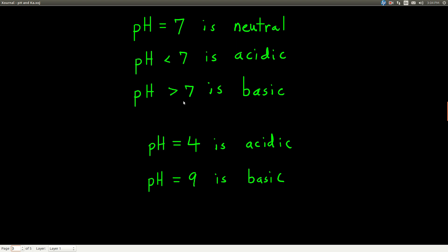If the pH is greater than 7, then it's basic. So for example, if the pH of a solution is 4, that's an acidic solution because it's less than 7. If the pH is equal to 9, it's a basic solution because pH is greater than 9.